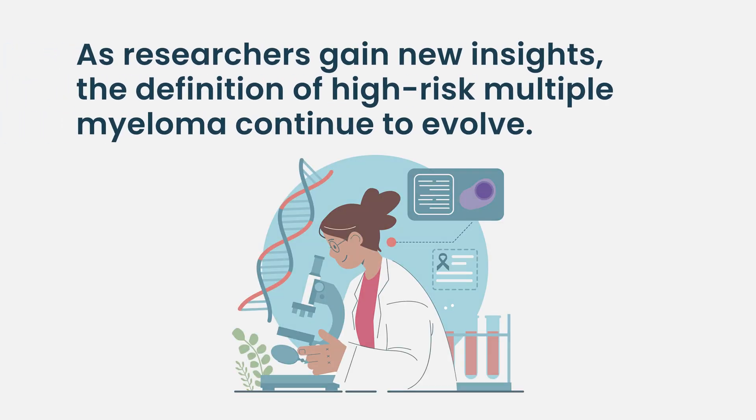Moving forward, our current iteration of the revised ISS staging system — the second version — we've recognized, and I think this is one of the more important realizations we've had as a myeloma community, is that these risk factors stack on each other. We now have a point-based system where two high-risk cytogenetic features is worse than one, and one is worse than none. Based on this point system, we've gotten better at discerning not just the very best and very worst risk, but teasing apart a low-intermediate and high-intermediate. We're thinking about myeloma as double hit and triple hit, referring to the number of high-risk cytogenetic features.